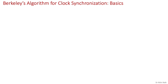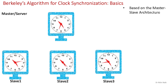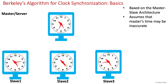Berkeley's algorithm is used for clock synchronization. It is based on the master-slave architecture where one node is elected as a master, which is responsible to compute the correct time. However, it assumes that the master's time may be inaccurate.